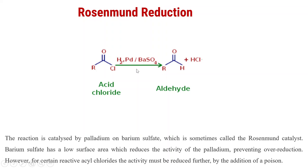After the removal of Cl, H comes here. HCl is removed, and one H is attached here. This is the final product in the case of the Rosenmund reaction.